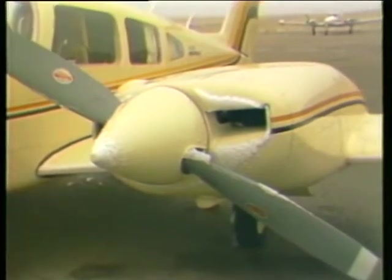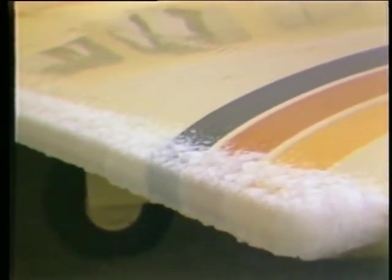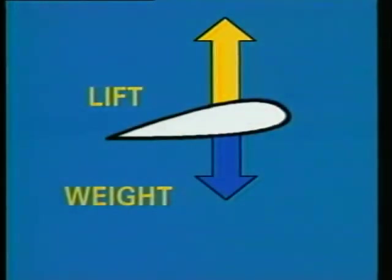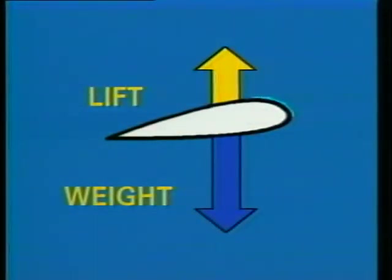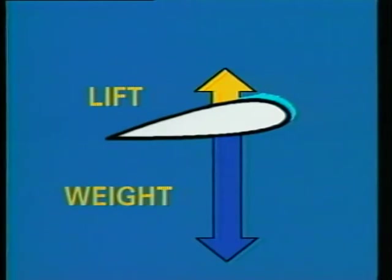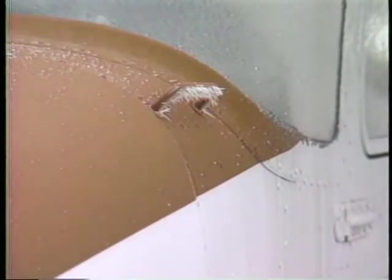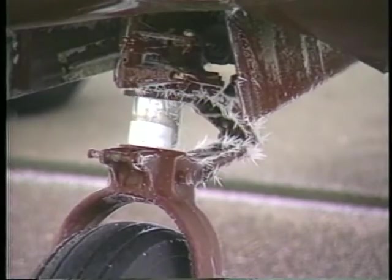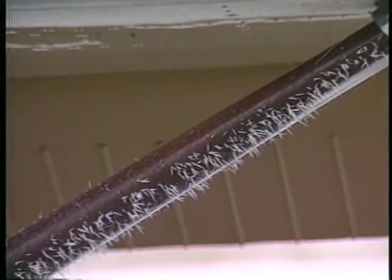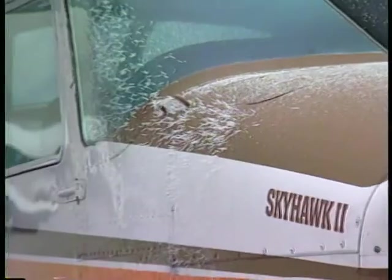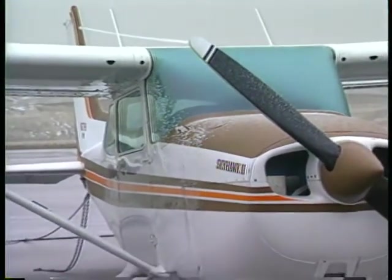Another weather hazard you should be familiar with is structural icing. Since it occurs only in visible moisture when the aircraft surface is at or below freezing, you're unlikely to encounter structural icing until you're instrument rated. The major reason icing is dangerous is because it changes the shape of the airfoil and destroys its lift. It can also increase the weight of the airplane and restrict control movements. Frost is a related element that you are more likely to encounter as a VFR pilot. Like icing it can be hazardous because it interferes with the smooth airflow over the wings resulting in a loss of lift. You should never take off unless you have removed all frost and other ice formations.